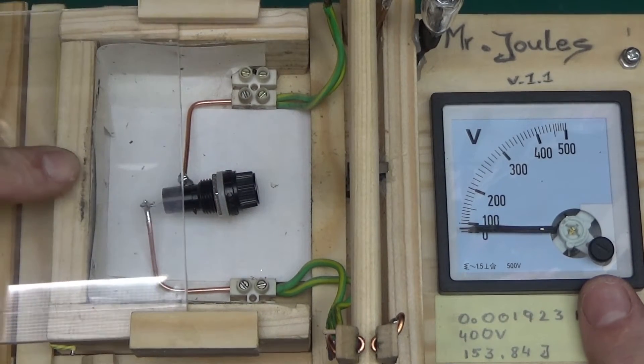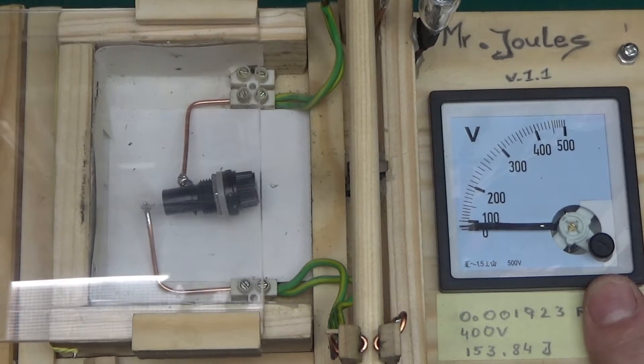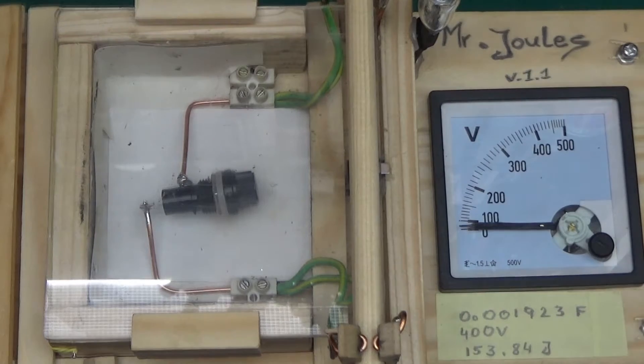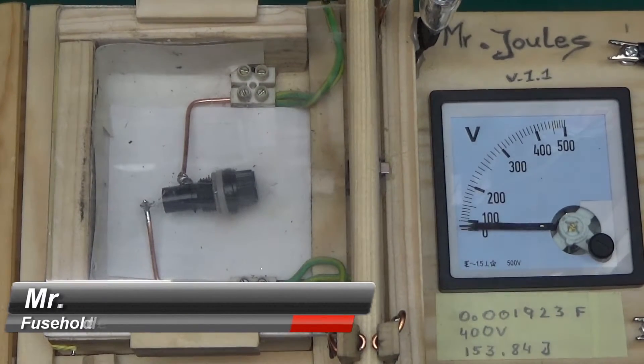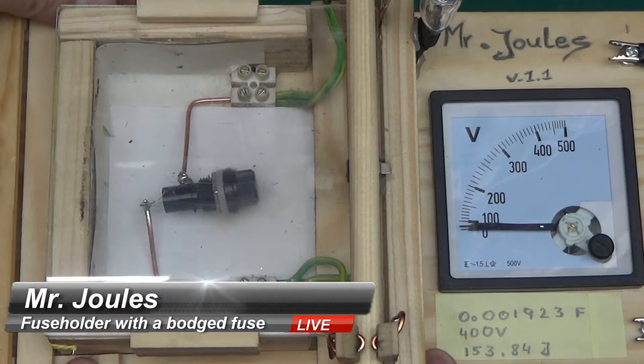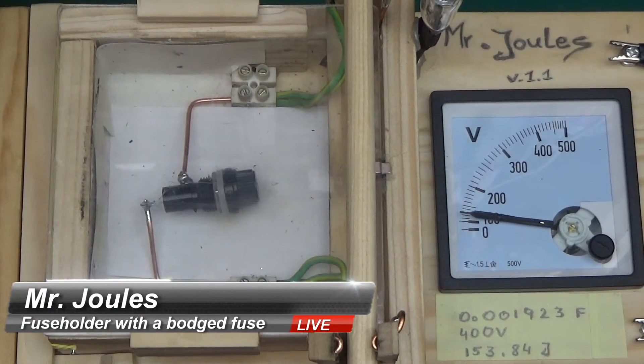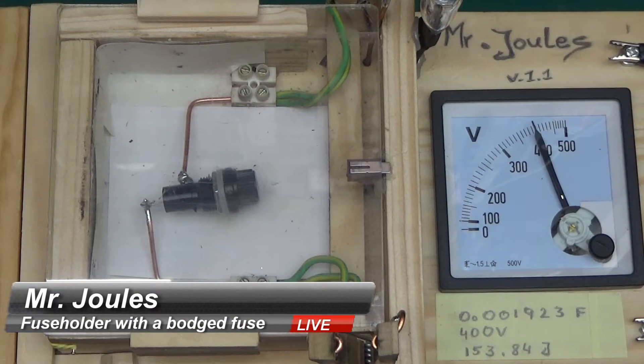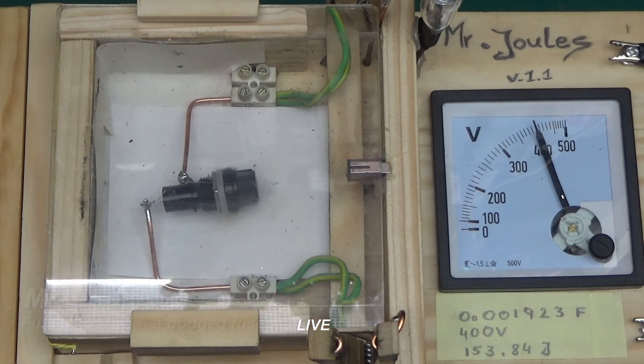Take two of the fuse holder test. Now this time the fuse is completely inappropriate. This is to test the fuse holder rather than the fuse itself. This is an inappropriate fuse in Mr. Joules in a fuse holder to see whether the fuse holder will work. Removing chicken stick and I am a little bit worried. Three, two, one.